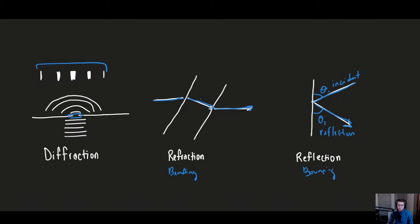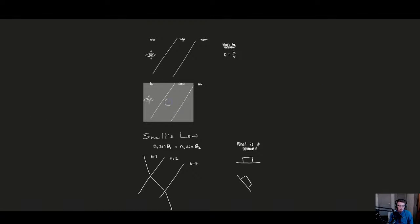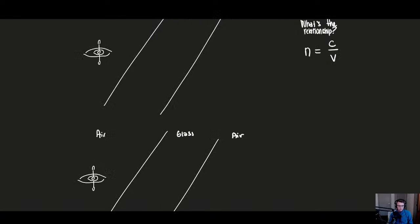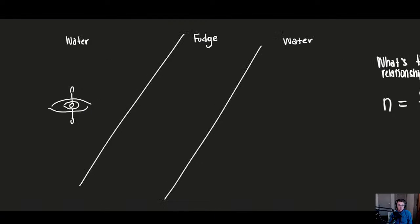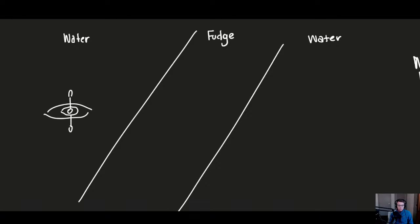We're going to look at refraction because this is the one that gives people a bit of trouble. We're going to talk about why the idea of slowing describes bending using an analogy. Imagine you're out kayaking — we have a setup where you're kayaking through water, hit a strip of hot fudge, and then go back into water. This is an analogy for what we see with light rays. In water you travel faster; when you hit fudge, you slow down because it's thicker and more viscous.